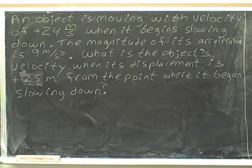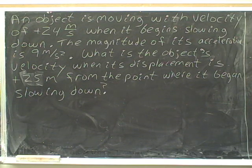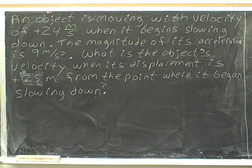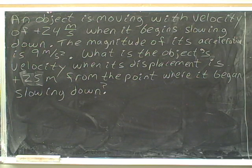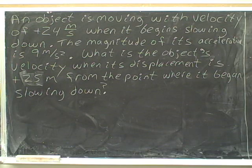Here's our next problem. An object is moving with velocity of positive 24 meters per second when it begins slowing down. The magnitude of its acceleration is 9 meters per second squared. What is the object's velocity when its displacement is positive 25 meters from the point where it began slowing down?